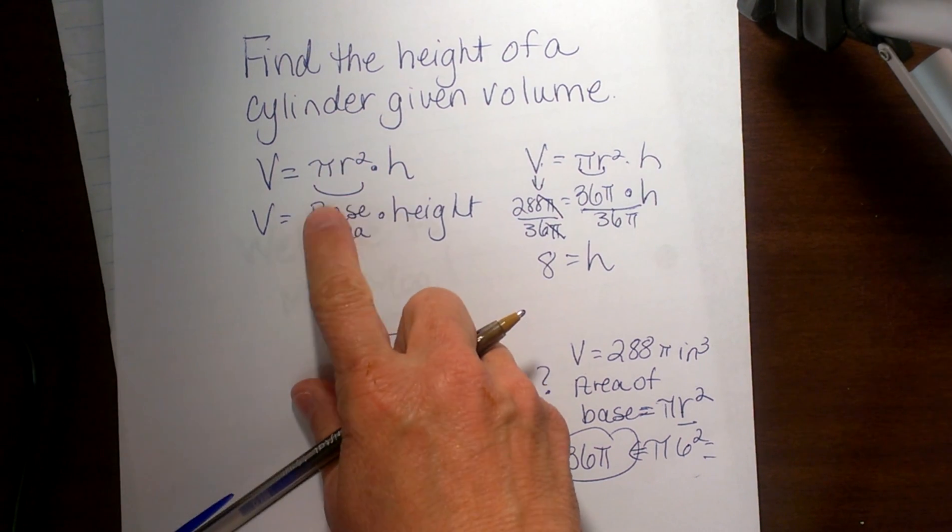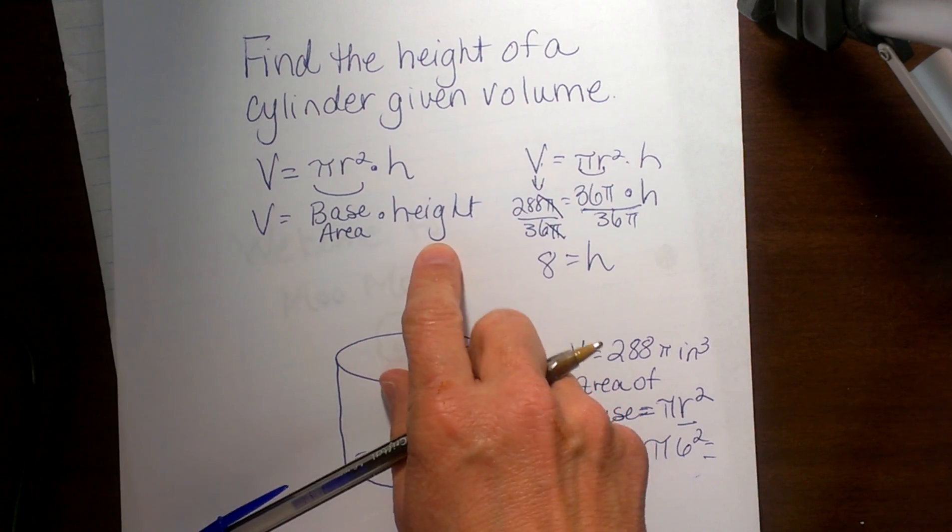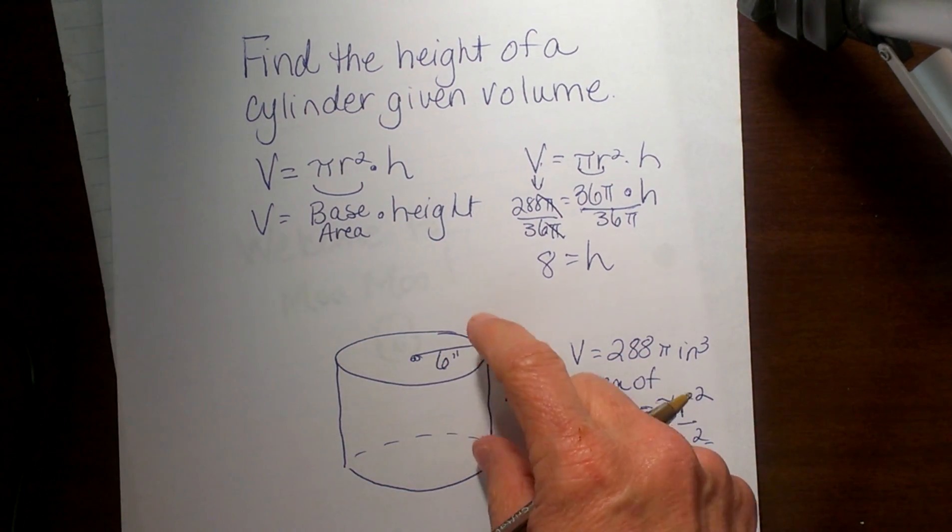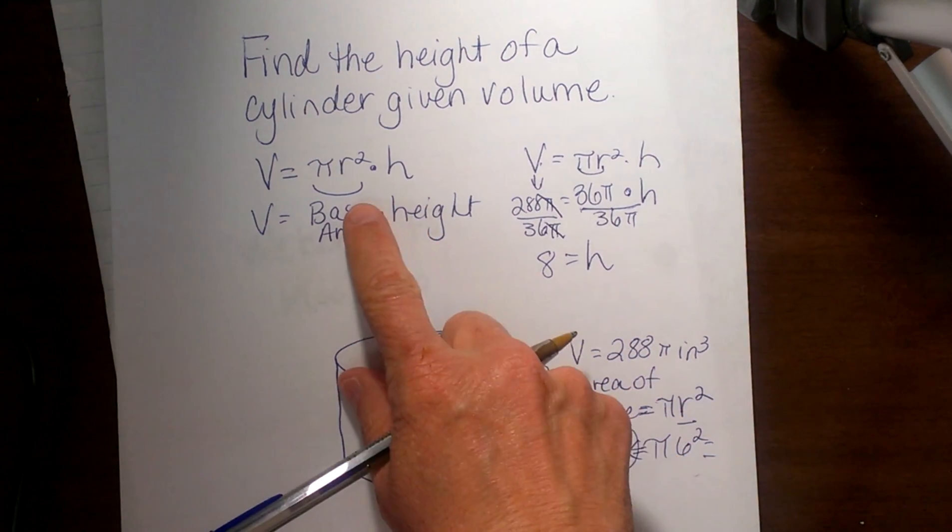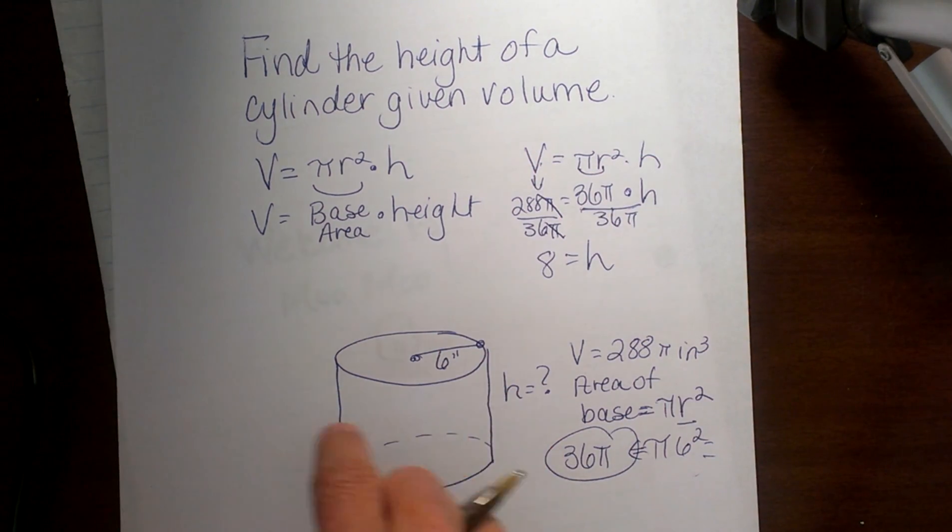Well pi r squared is just the base area of this cylinder and the height h is just the height of the cylinder. And so what we are going to do is go over here and start filling in some information that we have.